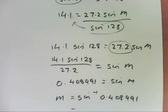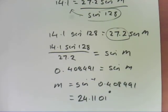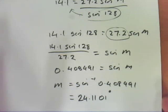So M equals sine to the minus 1 of 0.408491. So M is going to equal 24.1101 degrees. So angle M, you can't see it, is 24.1101 degrees.